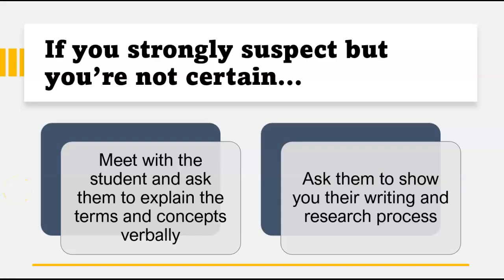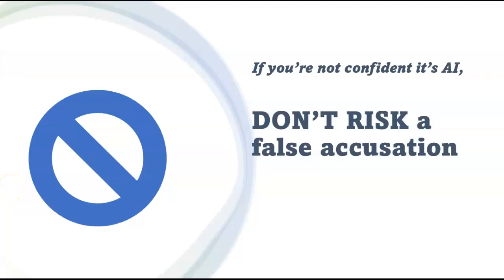If you're pretty sure your student used AI to generate their essay but you're not a hundred percent sure, here's what I recommend. Any student who actually wrote the essay should be able to explain what the words and concepts mean, what they were thinking when they wrote it, and show you their writing process — how they got the idea, what sources they found, how they put it together. But if you're not confident something is AI generated, don't risk a false accusation. It is better to miss someone's AI use than to falsely accuse someone and have them face severe repercussions.